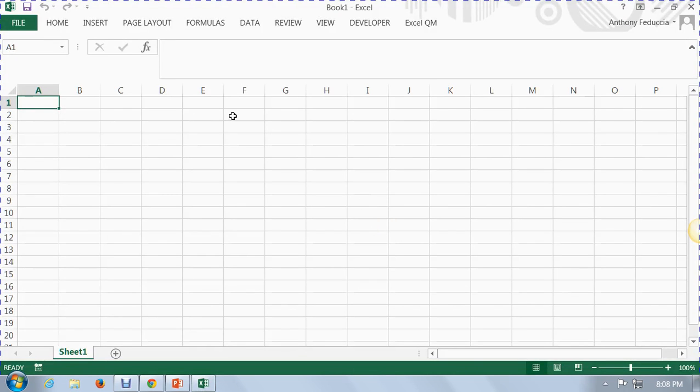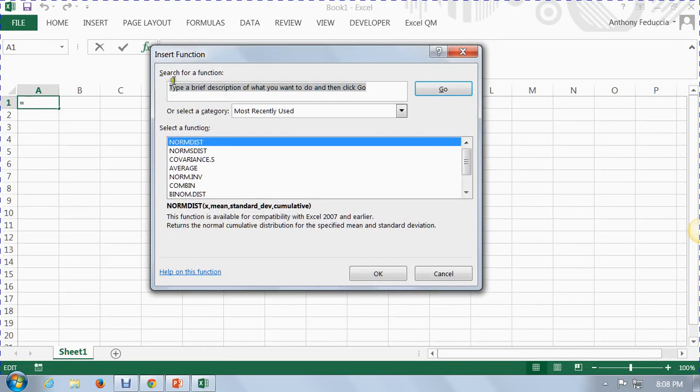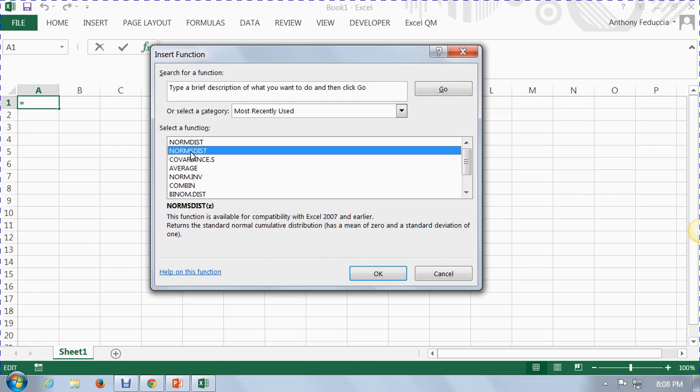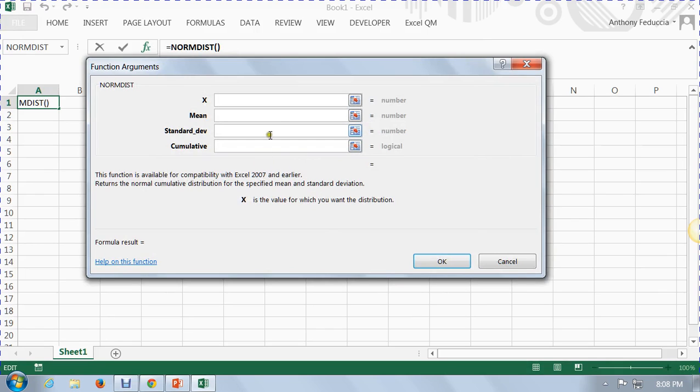We're going to click on the function right here. And you can either type in up here what you're looking for. But we already know we're looking for the normal distribution. And you can either use NormDist or you can use NormSDist. You get the same thing either way. I'm going to use NormDist. And what it wants to know is what the mean is. And we know the mean is 166. Let me put that in. It wants to know standard deviation, which we know is 8.